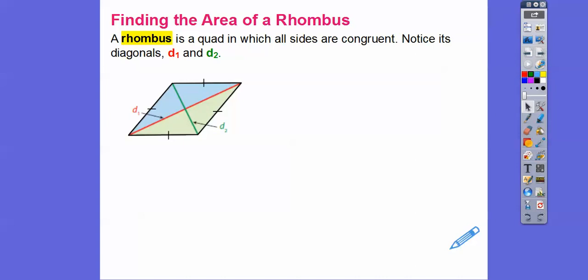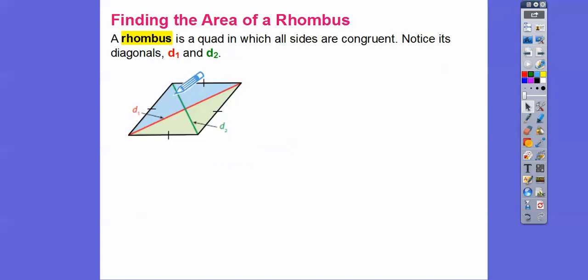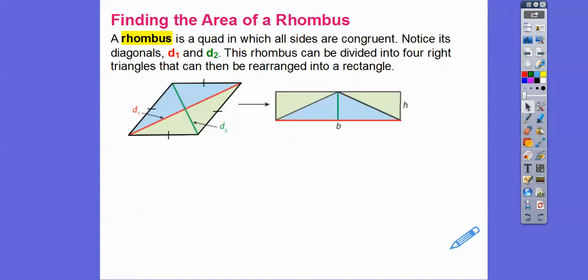Notice the diagonals of this rhombus. The red diagonal is D1, and the green diagonal is D2. They form four little right triangles inside. I'm going to divide them into two groups of two triangles. What we're going to do is reshuffle all four triangles into a rectangle. Notice this length here — these two triangles — form the base B of the rectangle, which equals diagonal one.